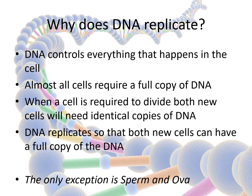You may be asking yourself why does DNA replicate? DNA controls everything that happens within a cell. Almost all cells require a full copy of DNA. When a cell is required to divide, both new cells will need identical copies of DNA. The DNA replicates so that both new cells can have a full copy of DNA. The only exception to this is sperm and egg cells, which only contain half the original DNA.